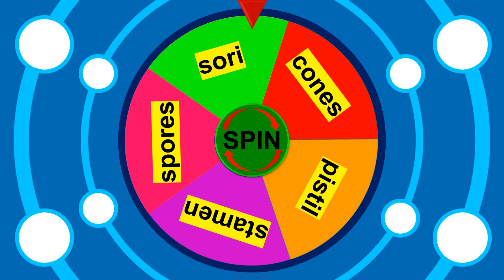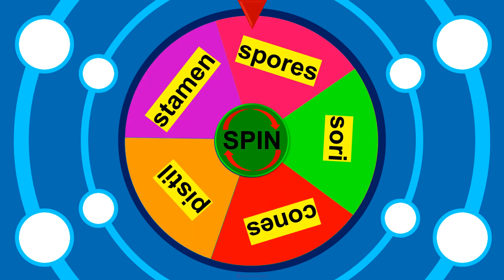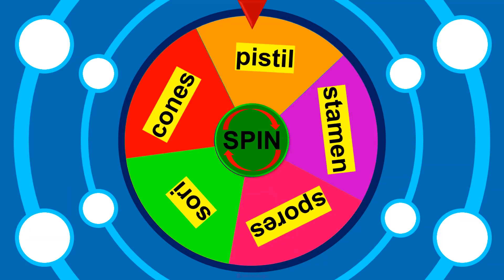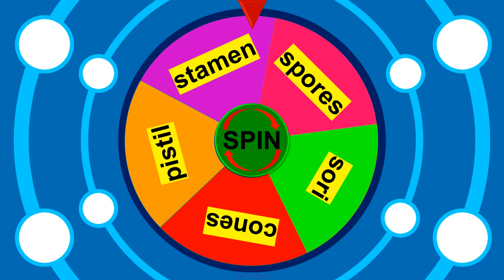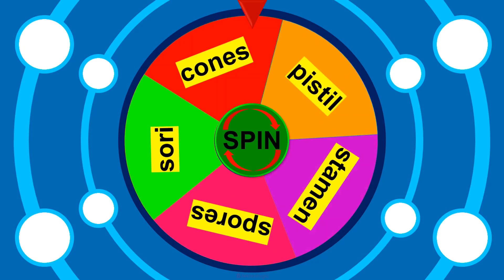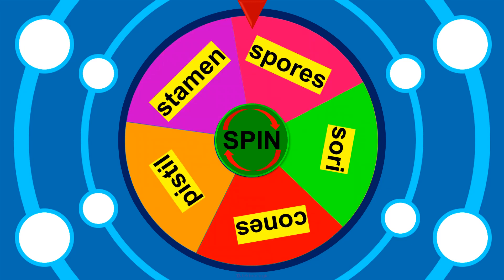That is correct — fern. Next. How about stamens? Of course, that is a part of a gumamela flower. Very good. How about spores? Of course, that is a reproductive part of fern.